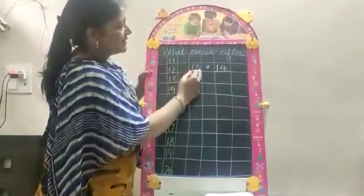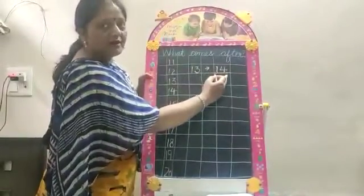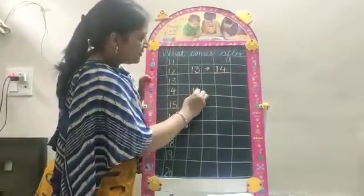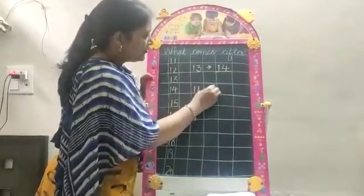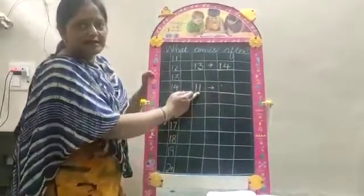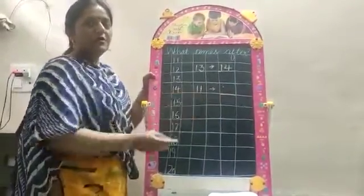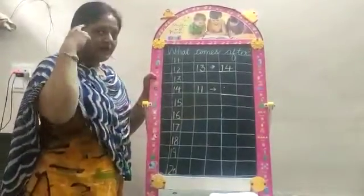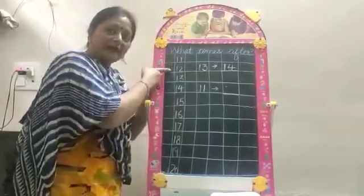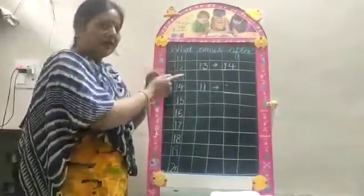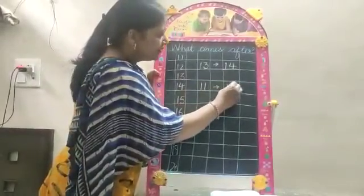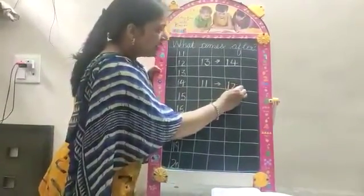What will come after 13? 14. And the next is 11. What will be the next number after 11? So read the counting in your mind: 11, 12. What is the next number? 11, 12. So the next number is 12. Write down 12.